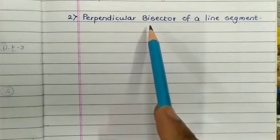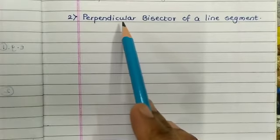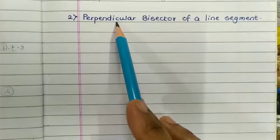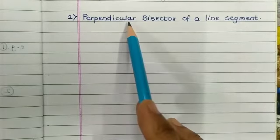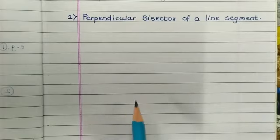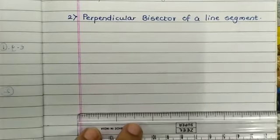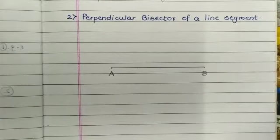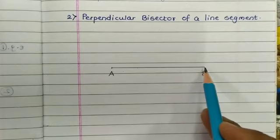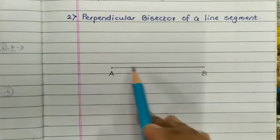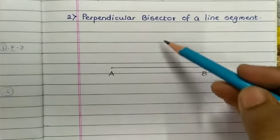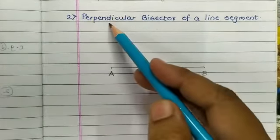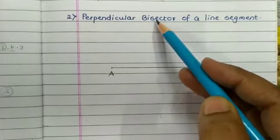A perpendicular bisector is a line that divides a line segment into two equal parts and is perpendicular to it. Here AB is the line segment and we have to divide this AB into two equal parts. For this, we will use the compass again.